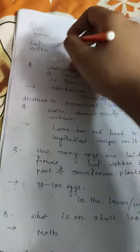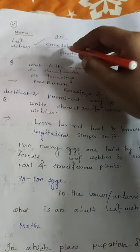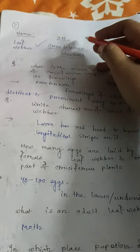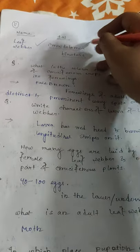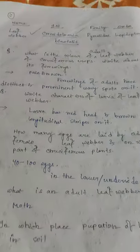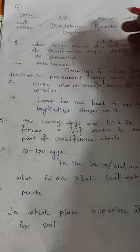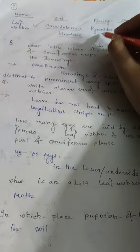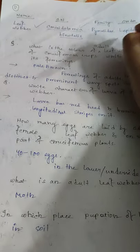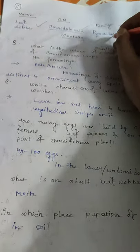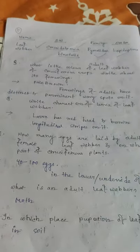The second insect pest is the Leaf Webber. Scientific name is Crochidolomia binotalis, family Pyralidae, order Lepidoptera.